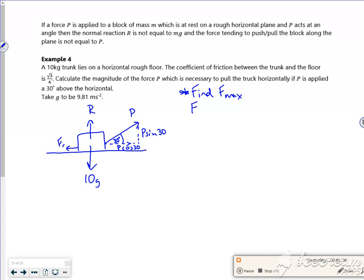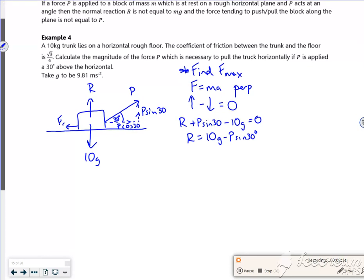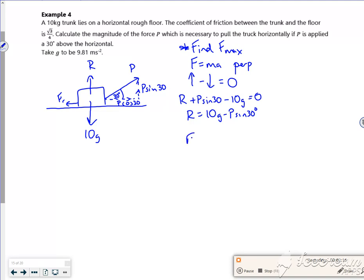So F equals MA, perpendicular or vertical. So it's in equilibrium, so up minus down is equal to zero. Now be careful now, because I've got this P sin 30 as well. So R plus P sin 30 minus the 10g is equal to zero. So my R value is 10g minus P sin 30. So it's a little bit messy because I want to do now my friction, my F max is mu R. So F max is root 3 over 4 times by R, which is 10g minus P sin 30.